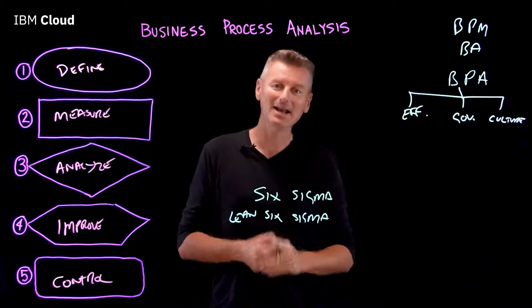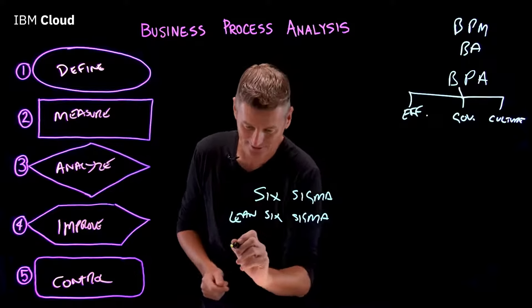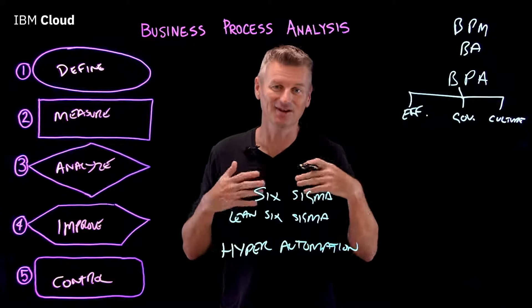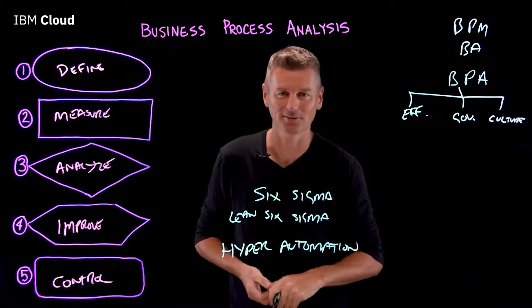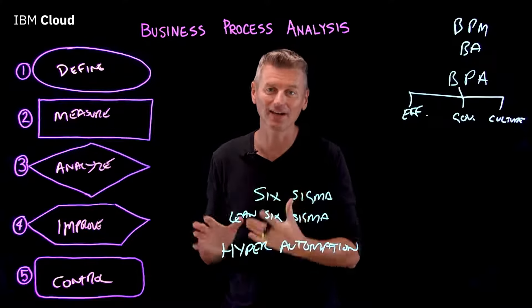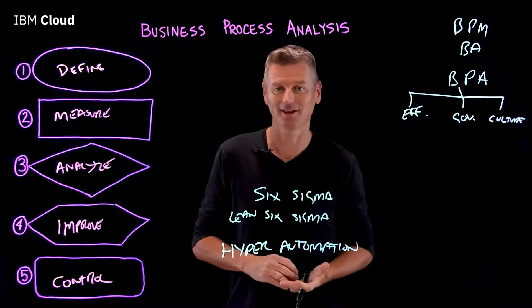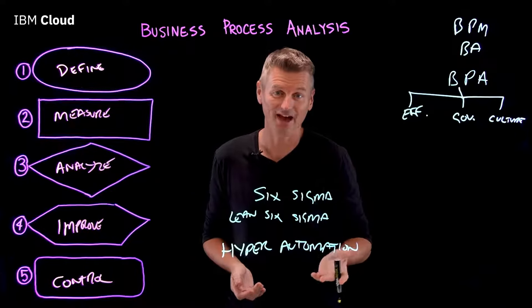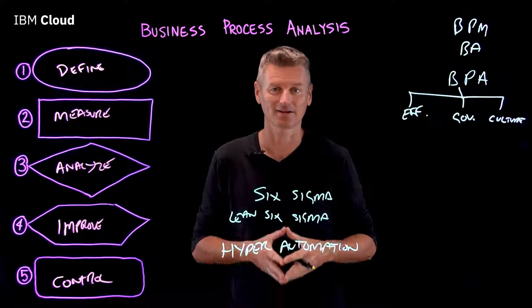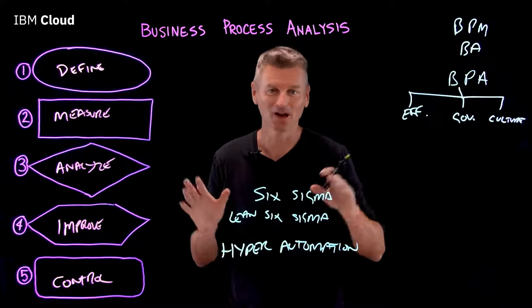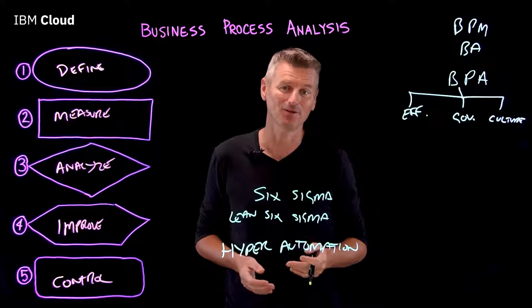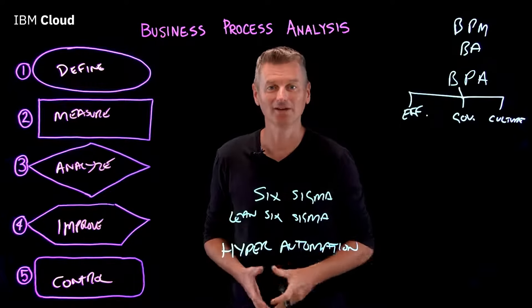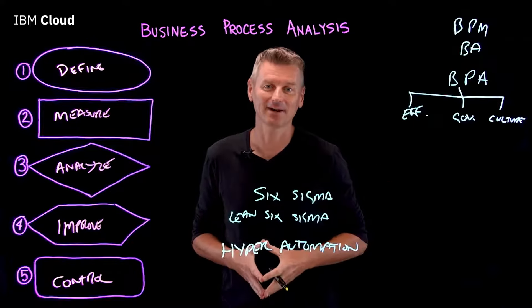That $600 billion industry teased at the beginning is called hyper automation. Hyper automation is the use of advanced technologies like AI and robotic process automation to automate tasks currently performed by human beings. BPA can help your organization create a documented, mapped path to integrating automated processes and moving towards hyper automation. A good example is how customer service centers can lower costs and optimize support by moving to fully automated chatbot support.